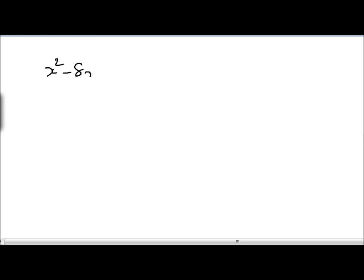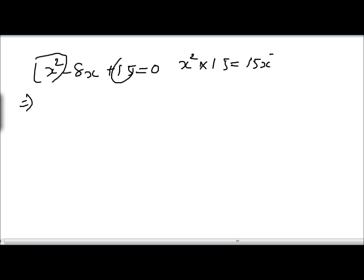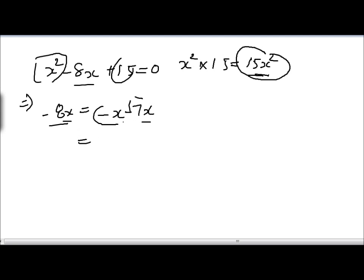These questions can be asked in some tricky ways. Let's look at one example: x squared minus 8x plus 15 equals 0. The product of the first and last terms is 15x squared. We need to split the middle term minus 8x into two terms whose product is 15x squared. Since the product must be positive, both terms must be negative. We try minus x minus 7x, then minus 2x minus 6x, then minus 3x minus 5x. We stop because the product of minus 3x and minus 5x is 15x squared.